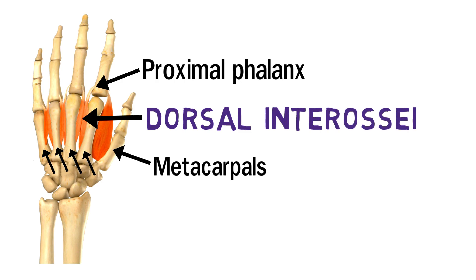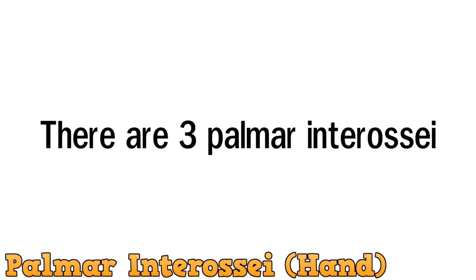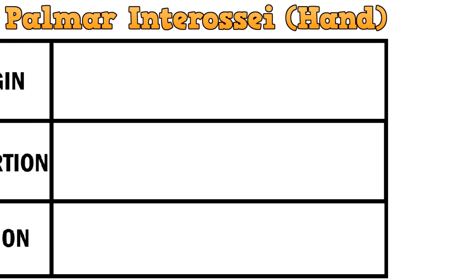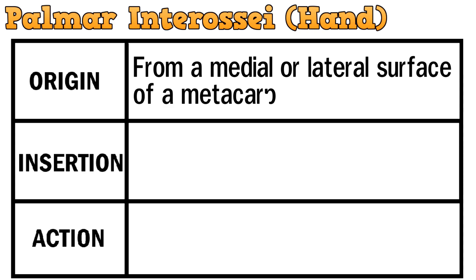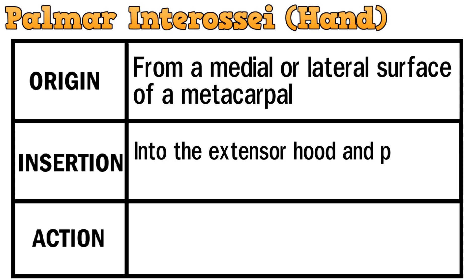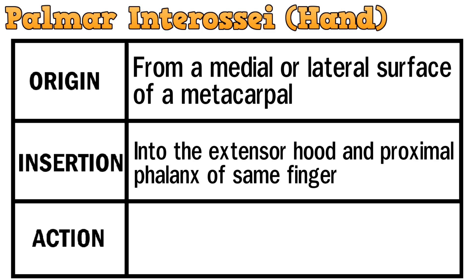Next muscles are the palmar interossei. There are three palmar interossei muscles. Each interossei originates from a medial or lateral surface of a metacarpal. The muscles attach into the extensor hood and proximal phalanx of the same finger. The action of the muscle is adduction of the digits.